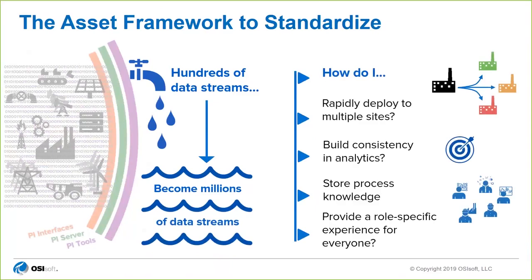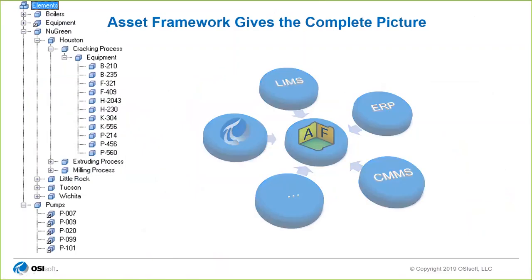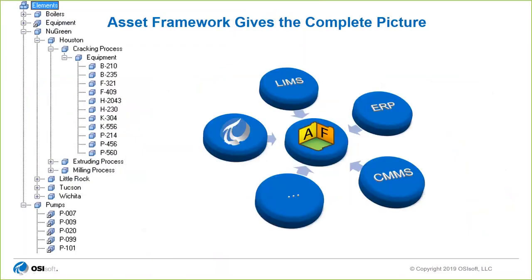Let me give you a little bit of what AF, the Asset Framework, is. It allows you to create meaningful organization and relationships around data. For example, I have a database with a Houston plant, and under that I have certain processes associated with that plant, and each process has certain assets responsible for it. This allows even an end user who may not be familiar with the processes to view all that data, and really lowers the barrier to entry.